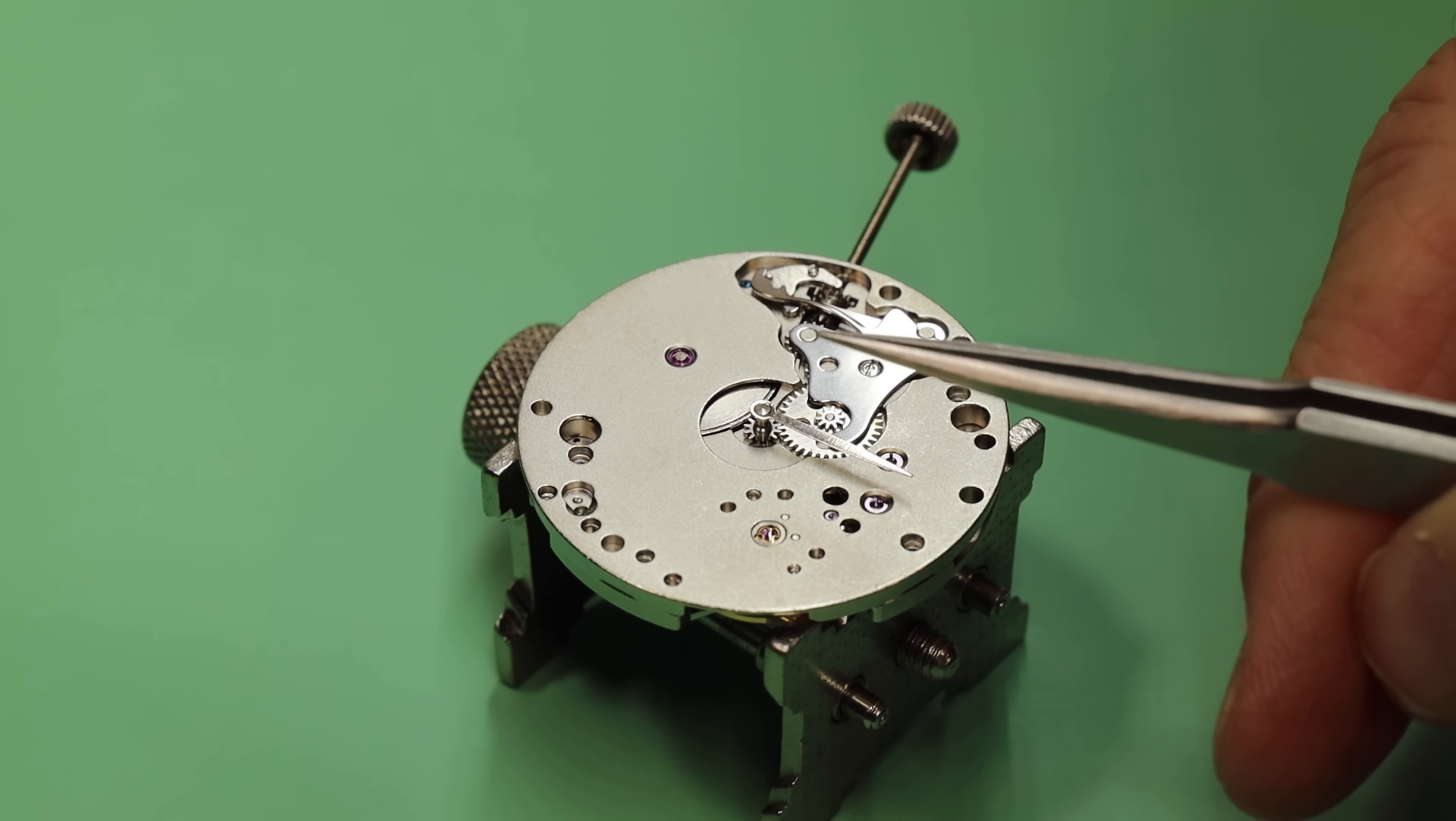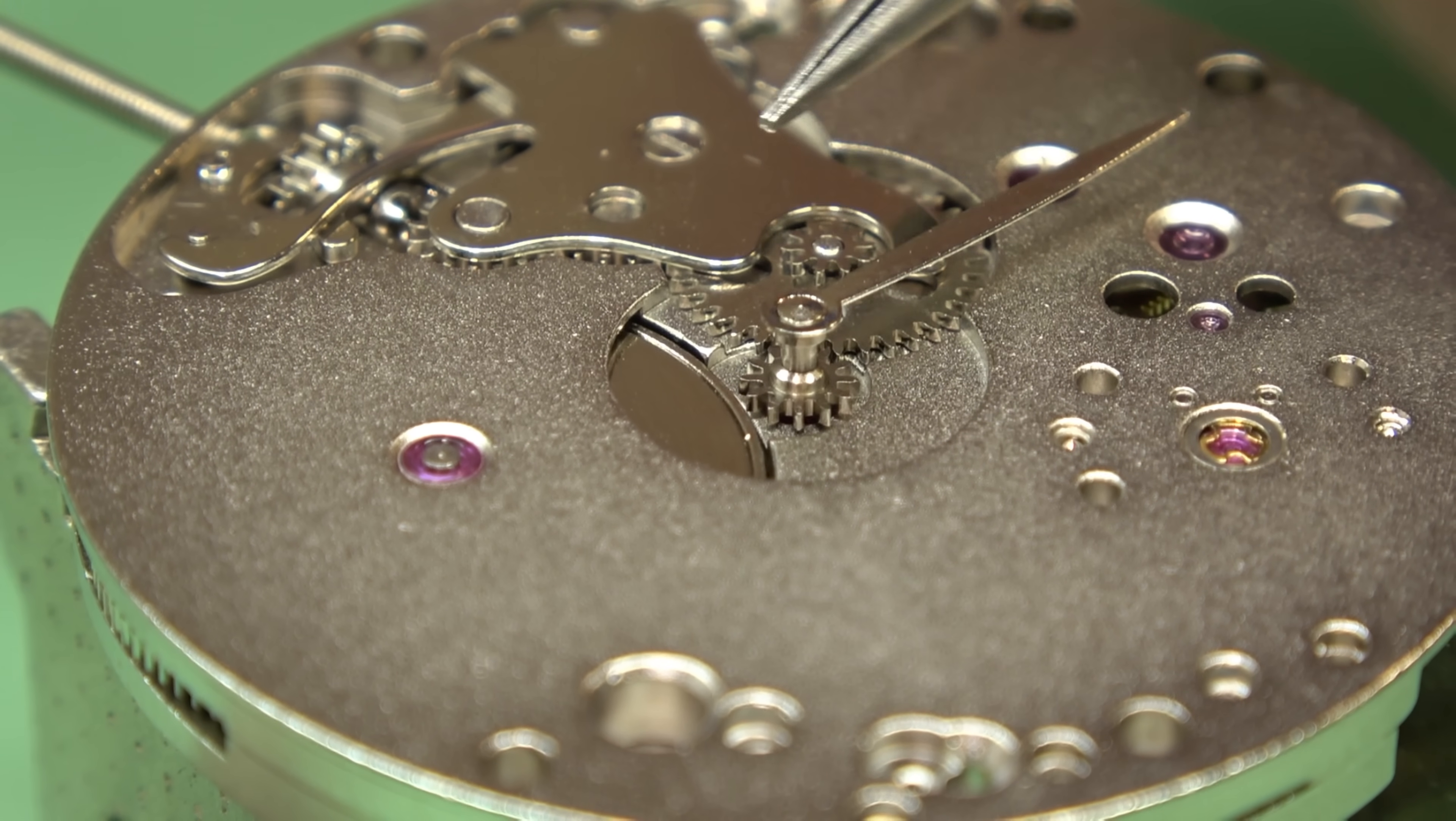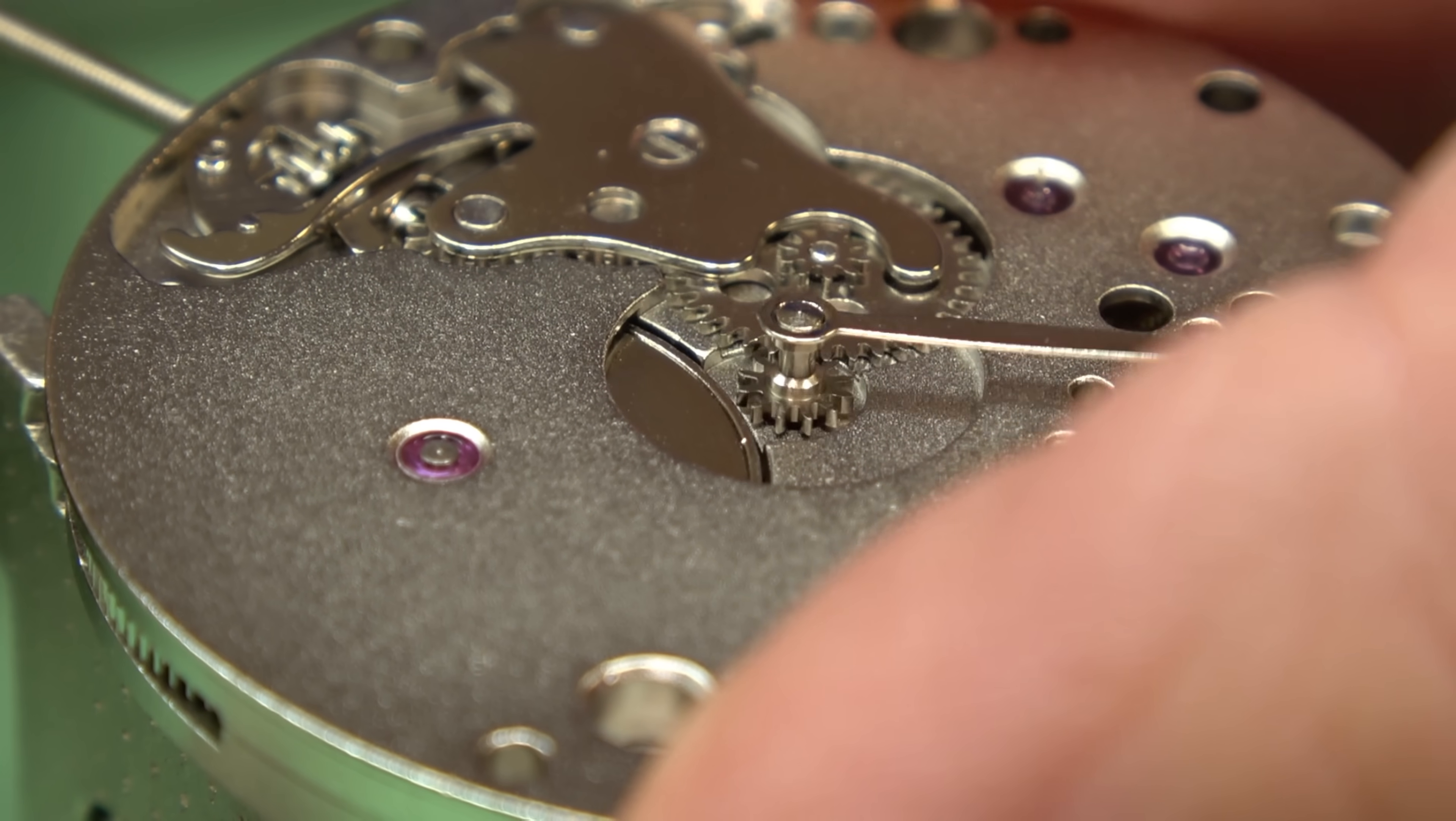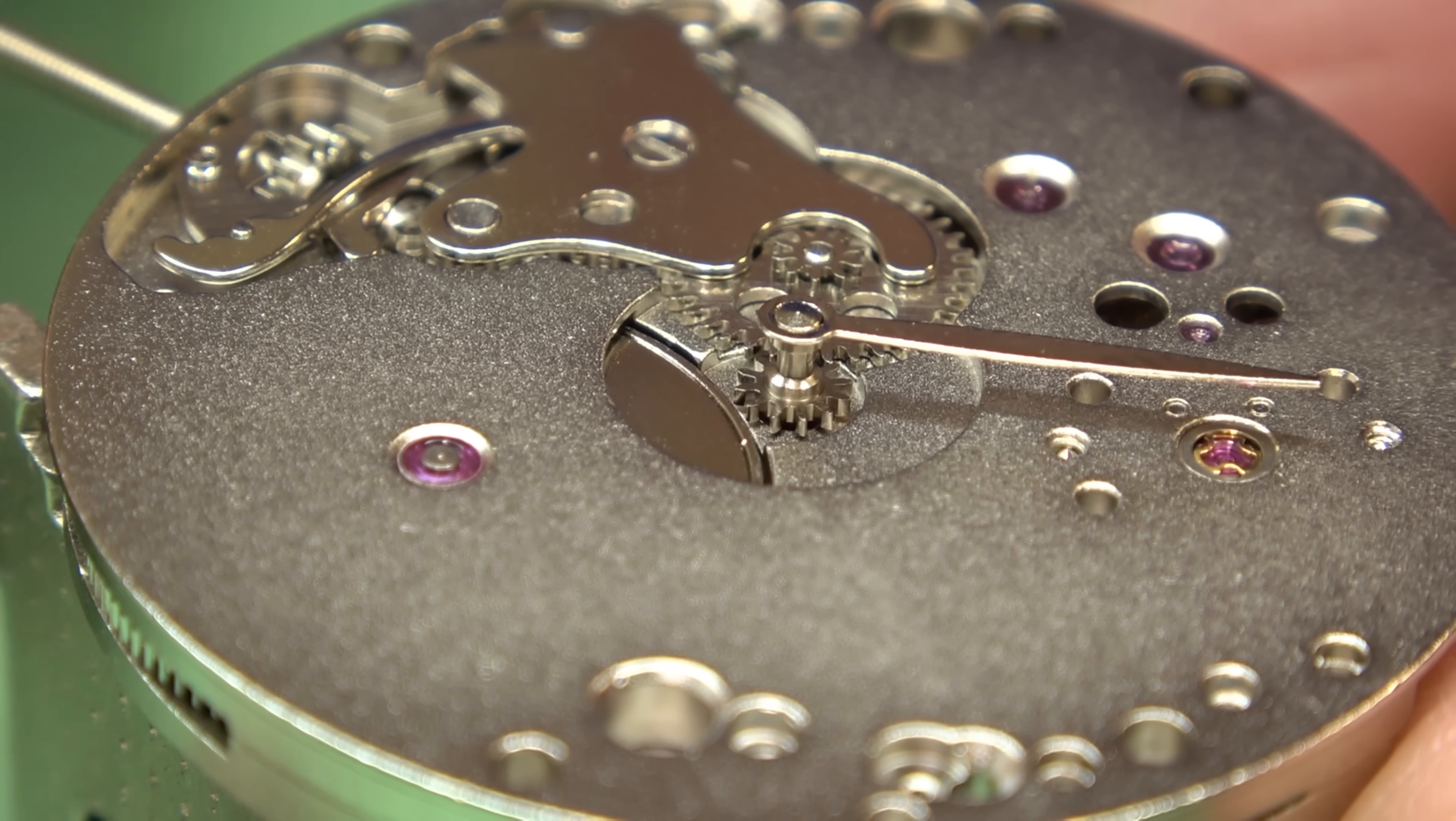So now we've flipped it around. We're on what we call dial side. Let's assume the dial has been removed. Well, there was never a dial on it, but the dial has been removed. And we have just one hand, there it goes right there. That is the minute hand. And if I go to change the time, you can see I can move that hand clockwise.